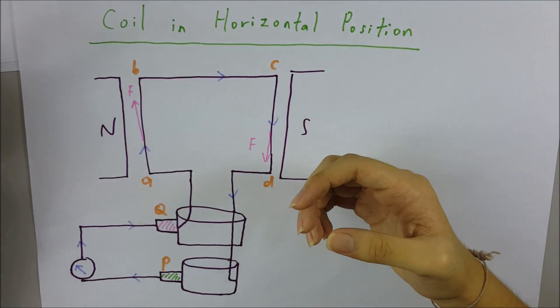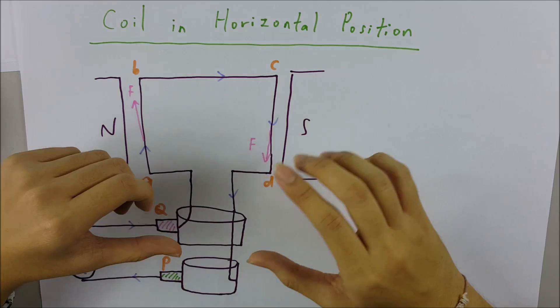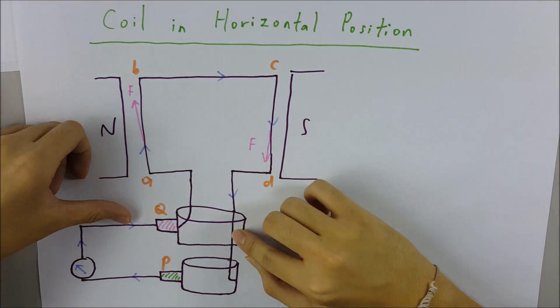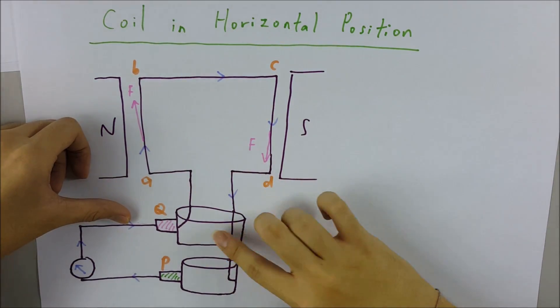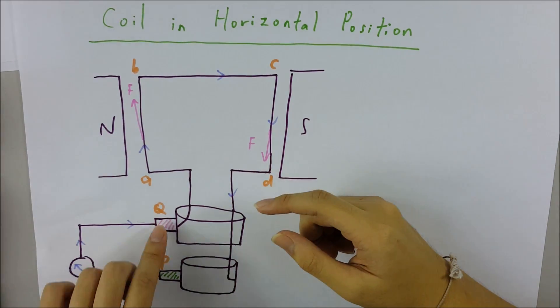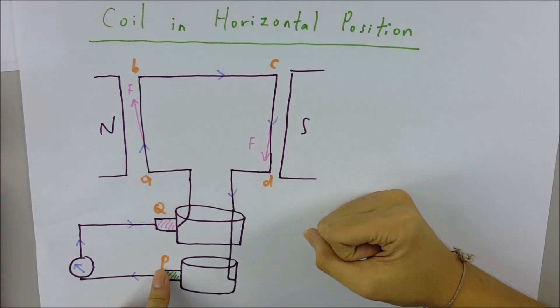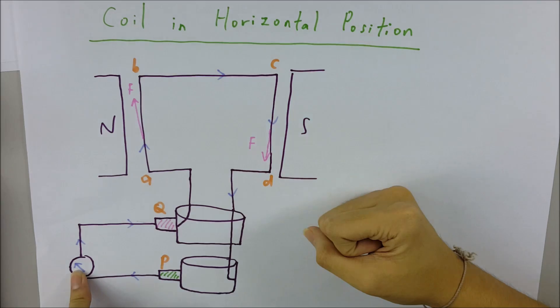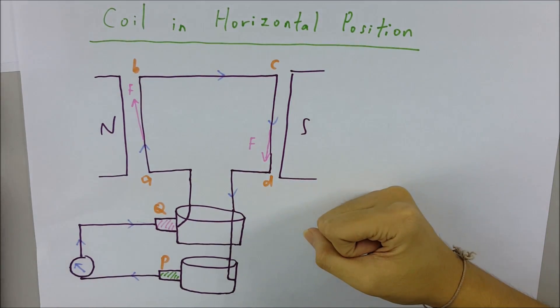DC generator uses the commutators, but in the AC generator we will use these slip rings. We have two carbon brushes labeled P and Q, and we have a load. We will use a galvanometer as the load so that we can see the direction of the induced current.